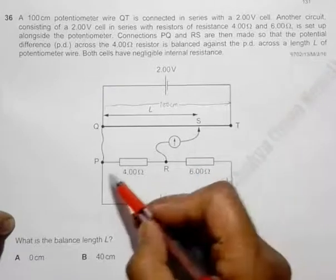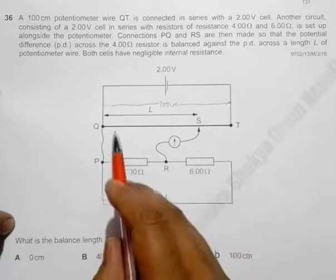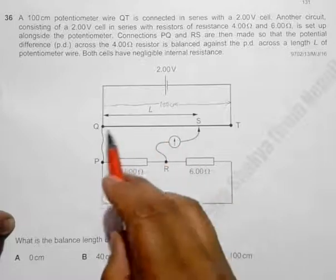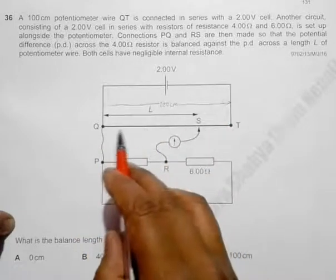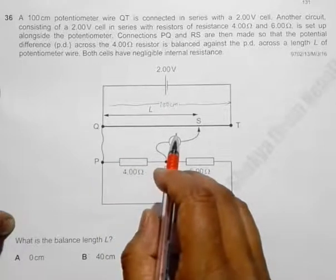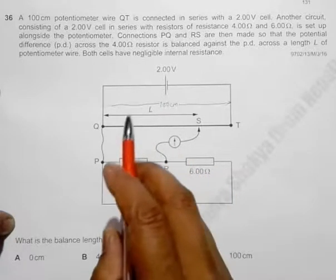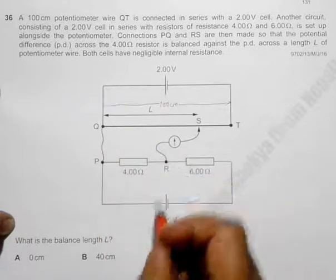This PD along this length. So both the cells have negligible resistance.